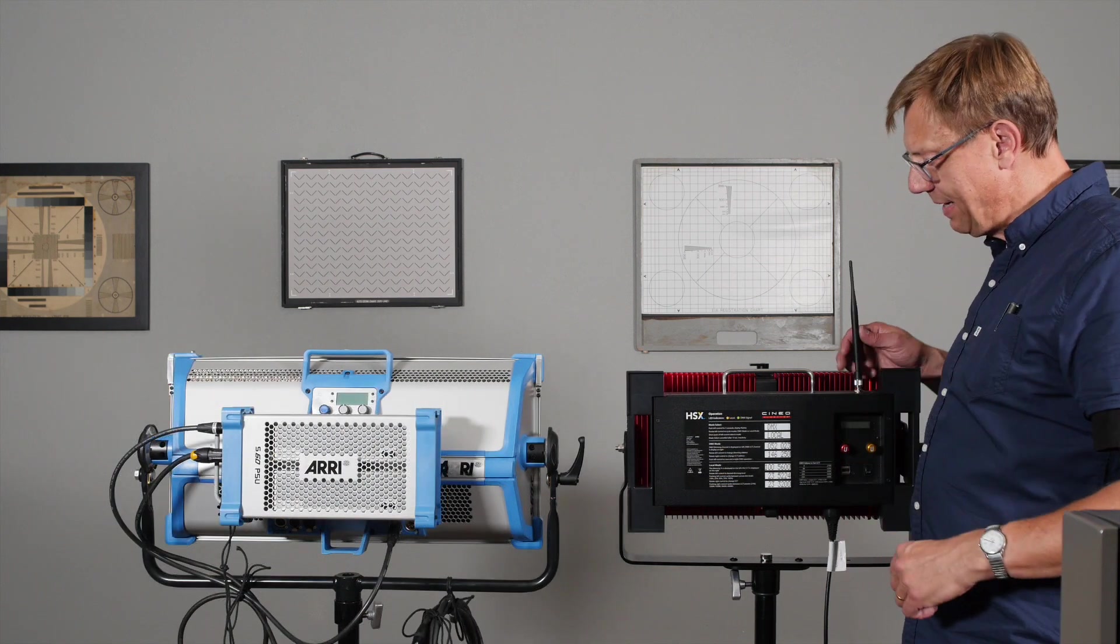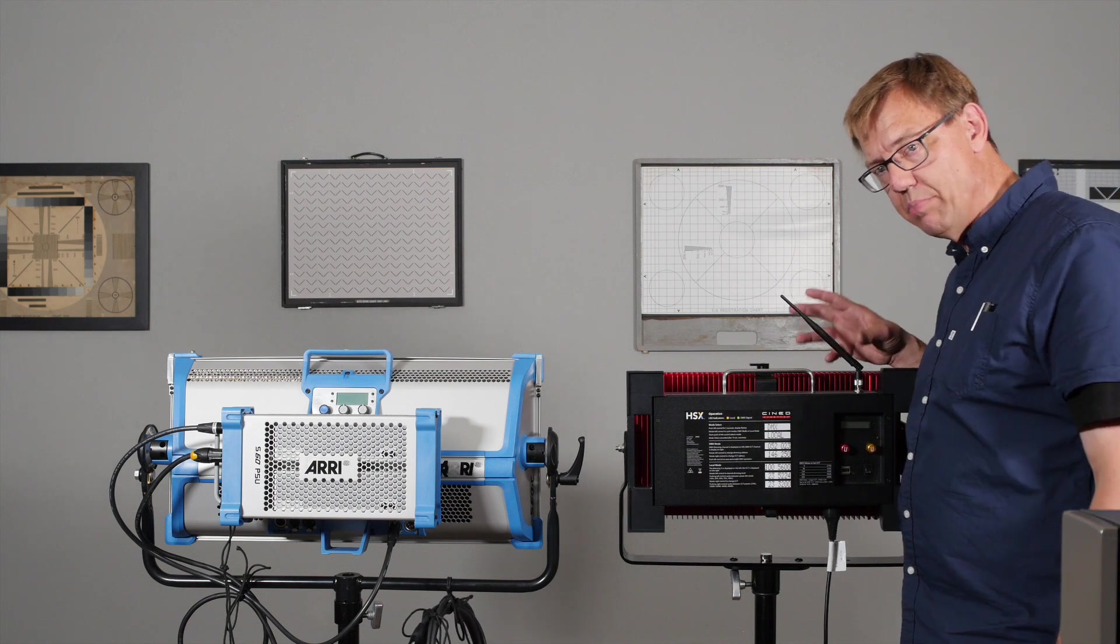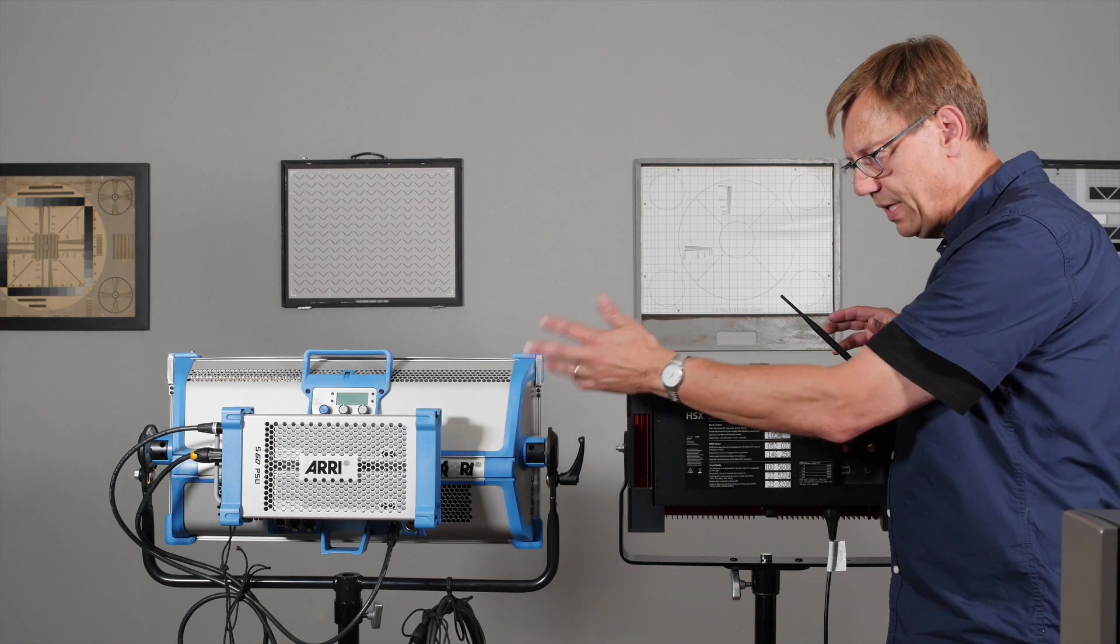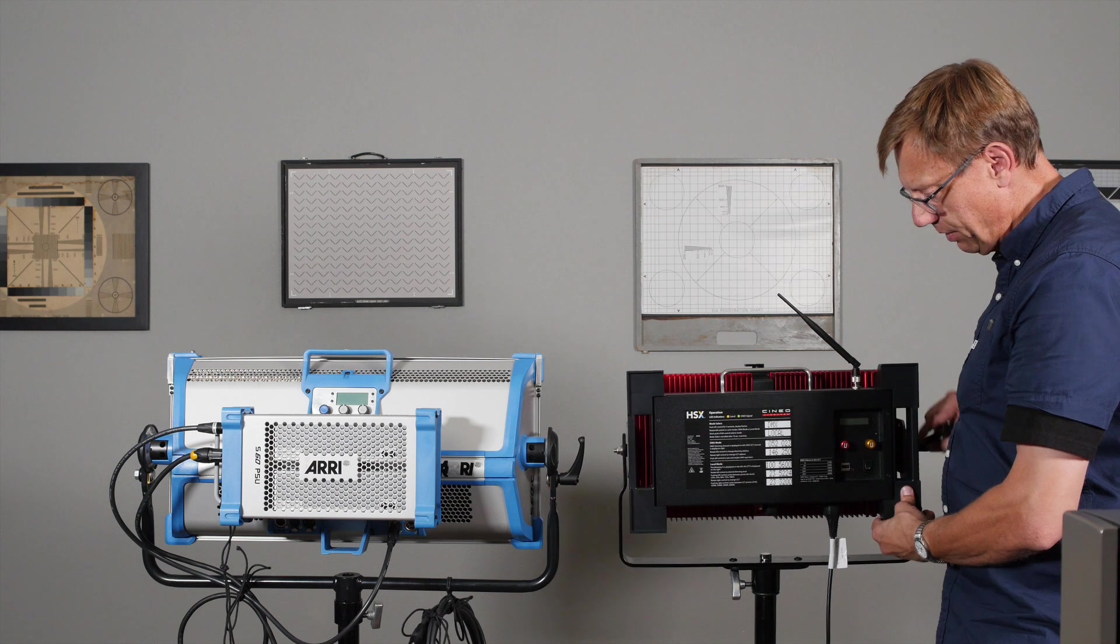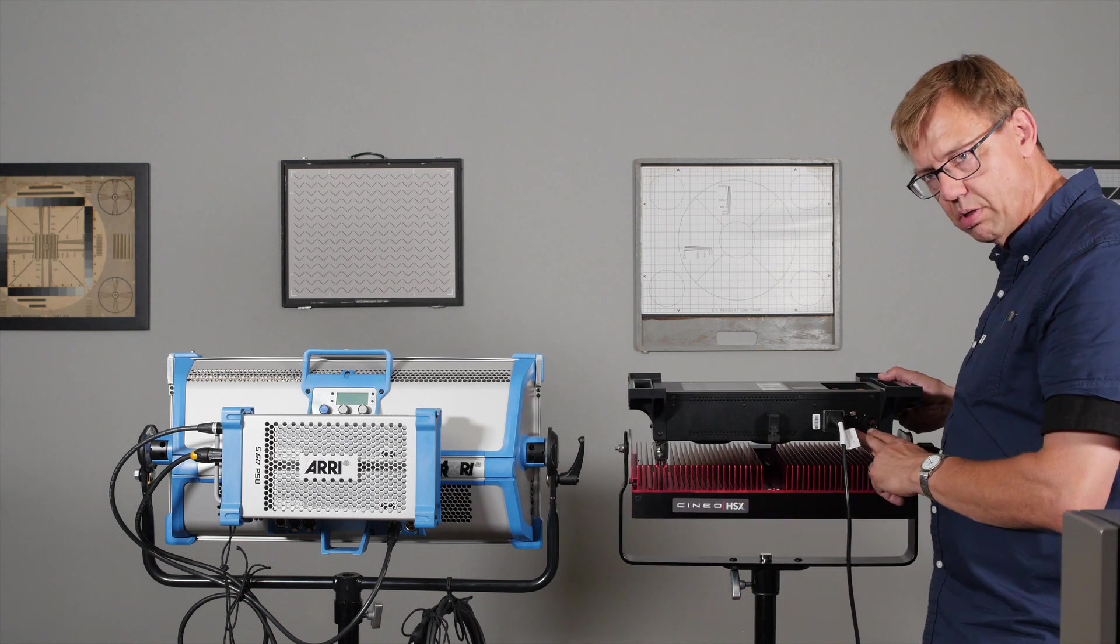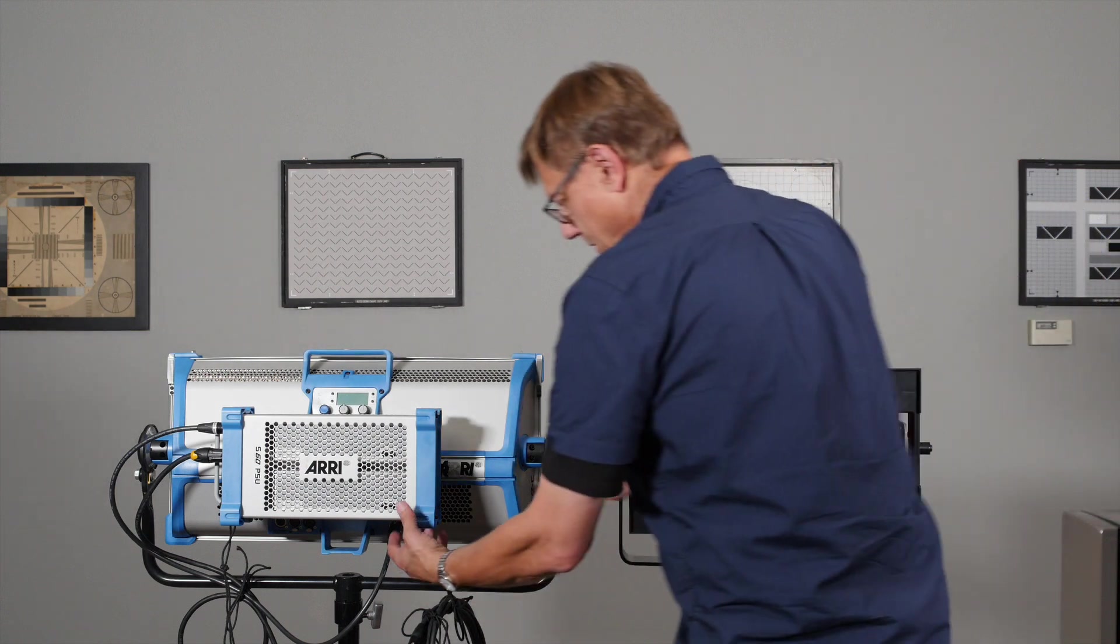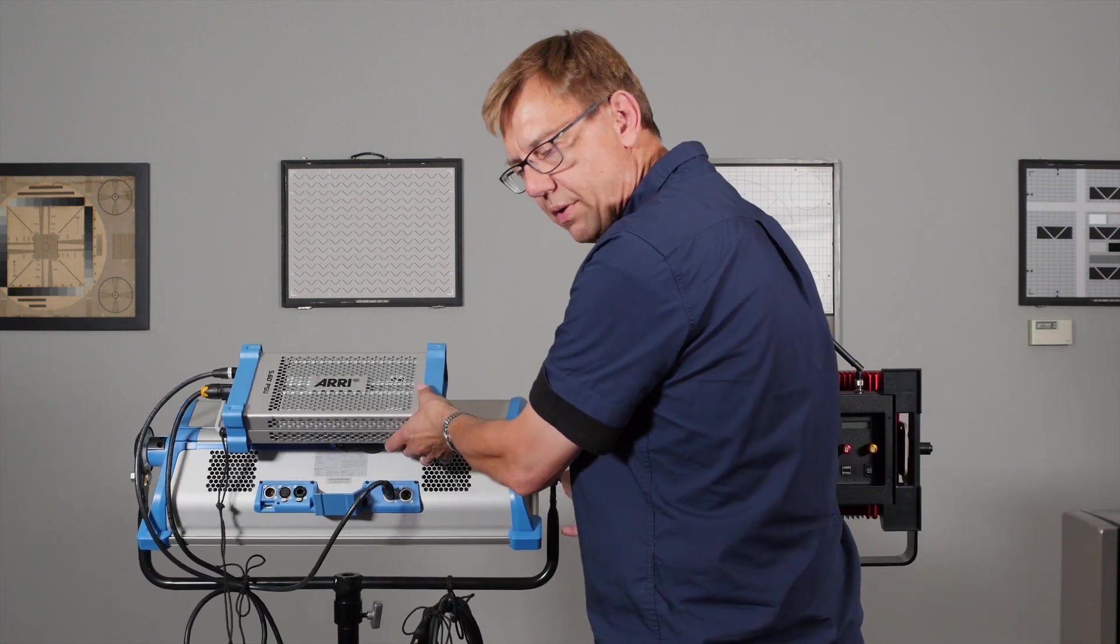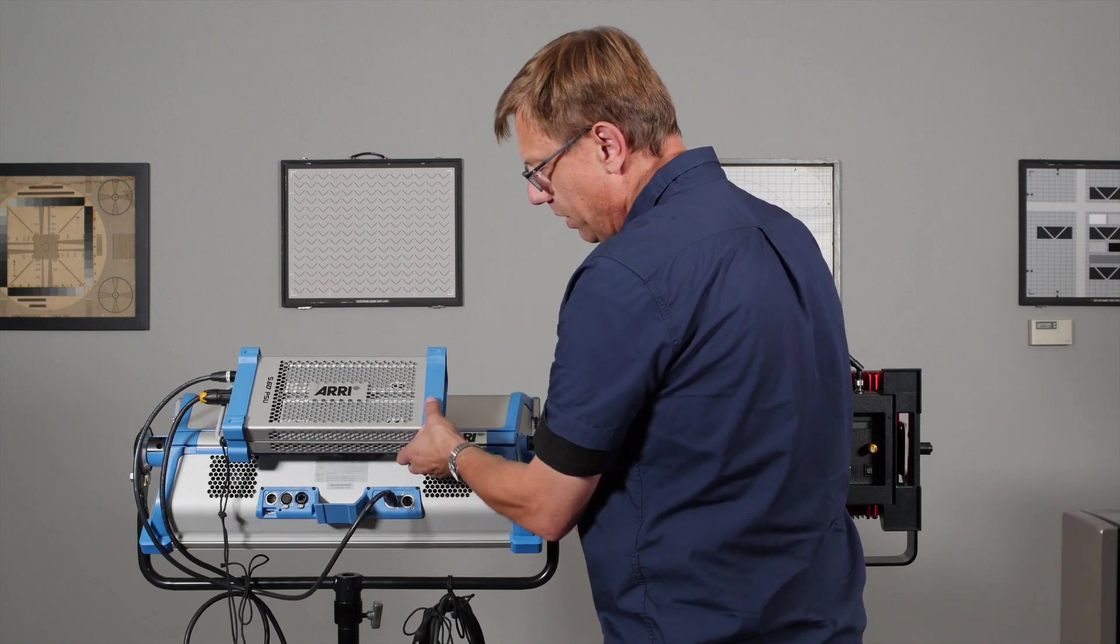I did want to add that the HSX comes with WiFi built in. So it's not something you need to add with a receiver. It's already there. Now if you just want to do it hardwire, no problem. That's just like the SkyPanel - you've got your in/out for the DMX, but you'd have to add a receiver if you wanted to go WiFi.